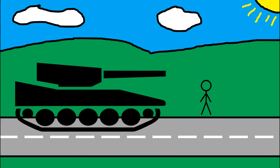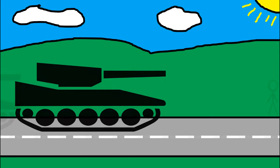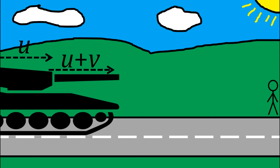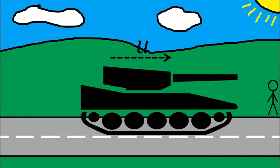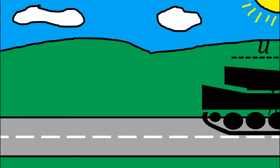Now suppose the tank fires a shell with velocity V relative to the tank. Of course, to someone standing by the road, the shell appears to have velocity U plus V. Keep this thought in mind.